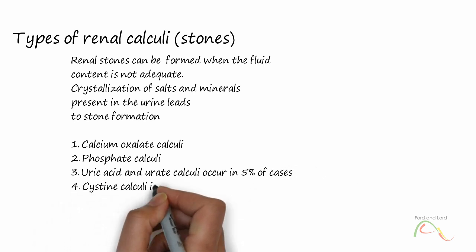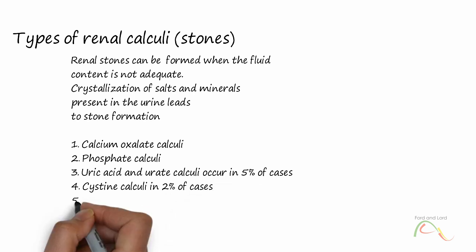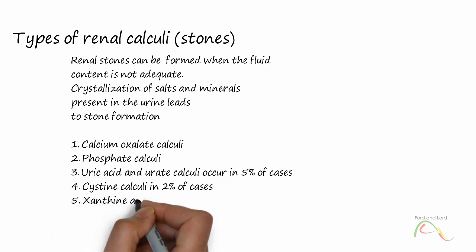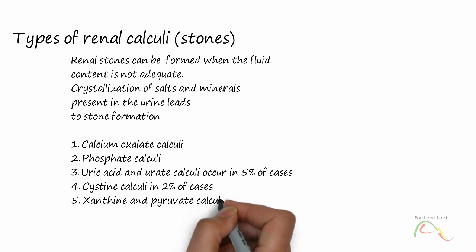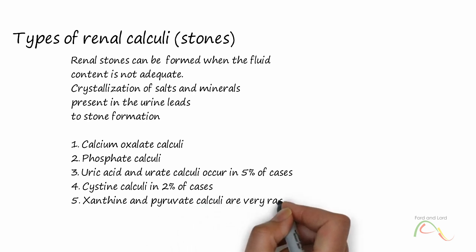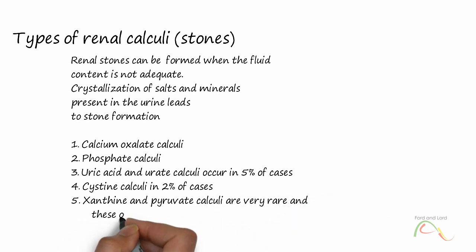Xanthine and pyruvate calculi are very rare and these occur due to inborn error of metabolism. 90% of calculi are radio-opaque and can frequently be seen on plain abdominal or KUB X-ray.